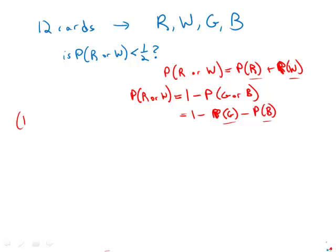Statement number one tells us the probability that a person will select blue is one-third. Probability of blue is one-third. By itself, that statement is not sufficient to answer the question, so this is insufficient.